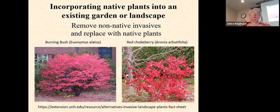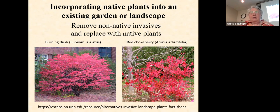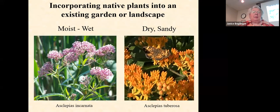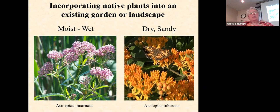If we're getting rid of non-native invasive species, we want to replace them with native plants. Burning bush is a standard foundation planting that we've now found is invasive — the seedlings get into woodland areas. But everybody loves that bright red fall color, and we can replace burning bush with native plants such as chokeberry, which also has bright red fall color. And we want to have plants based on whether they need moist, wet, dry, or sandy soil conditions. Within a species — say milkweed — we can find the right one for our site with just a little research.